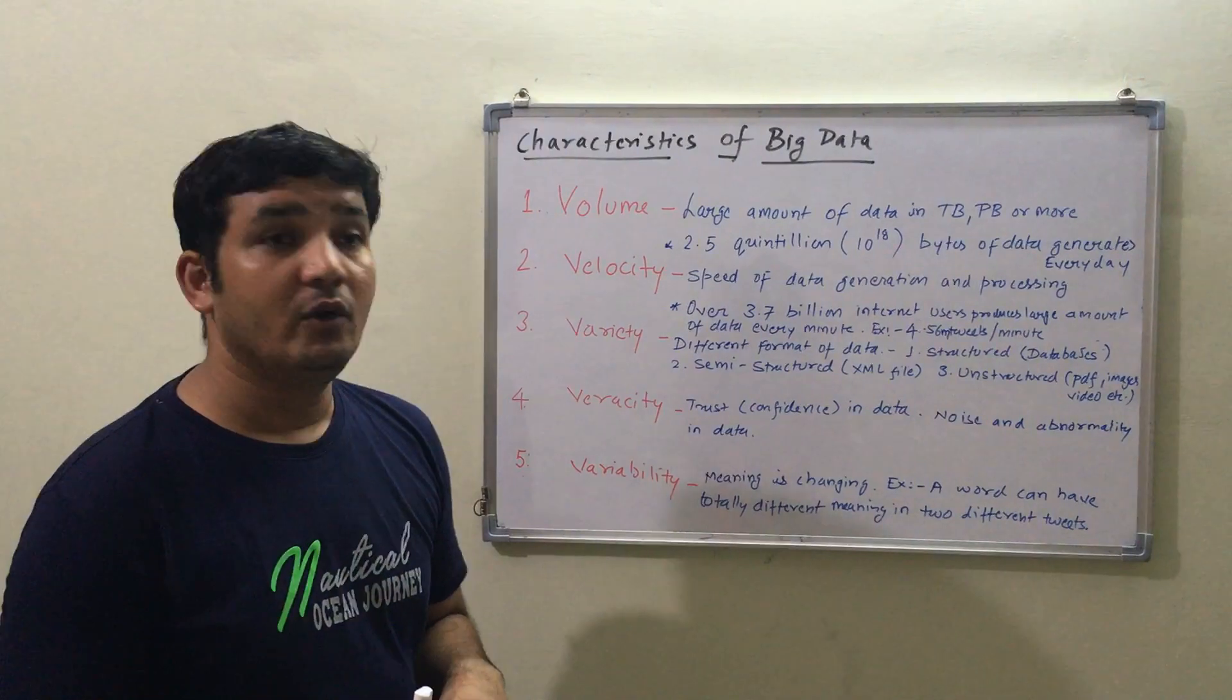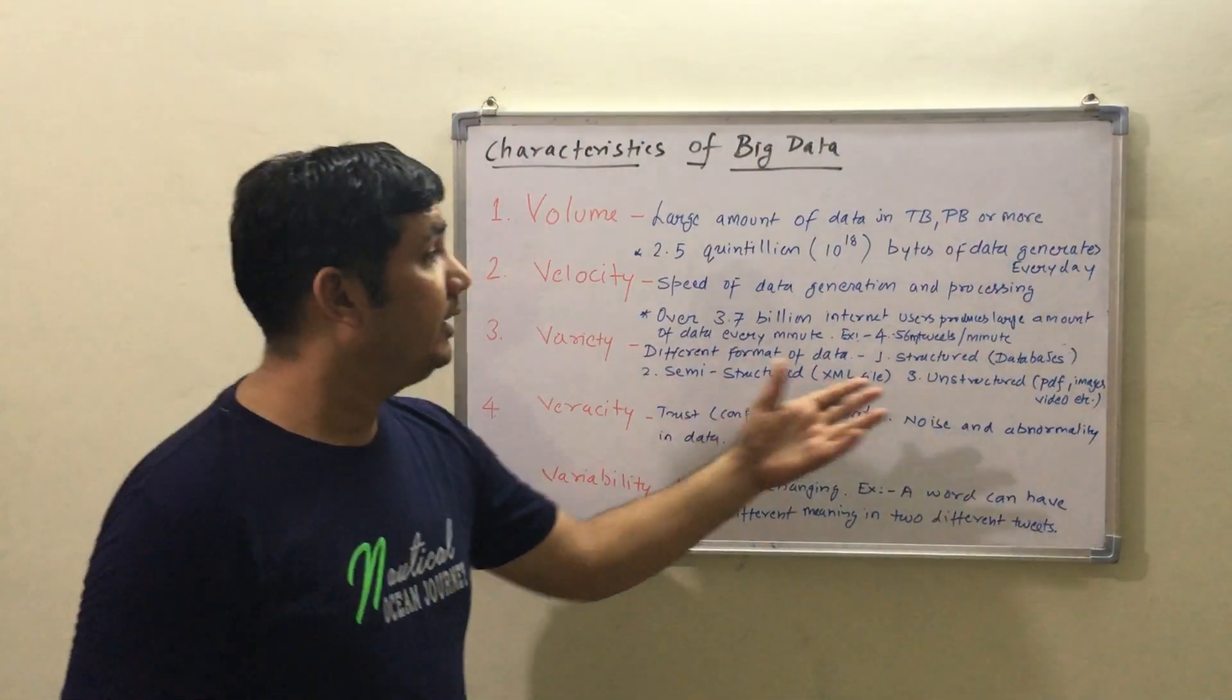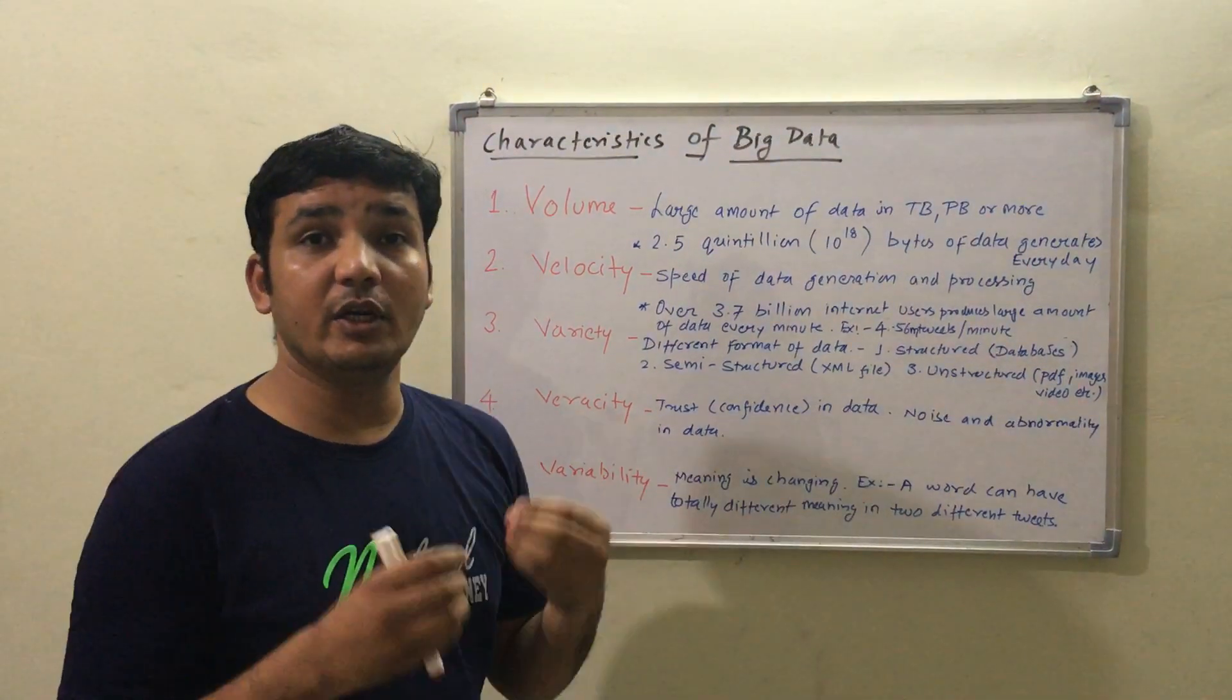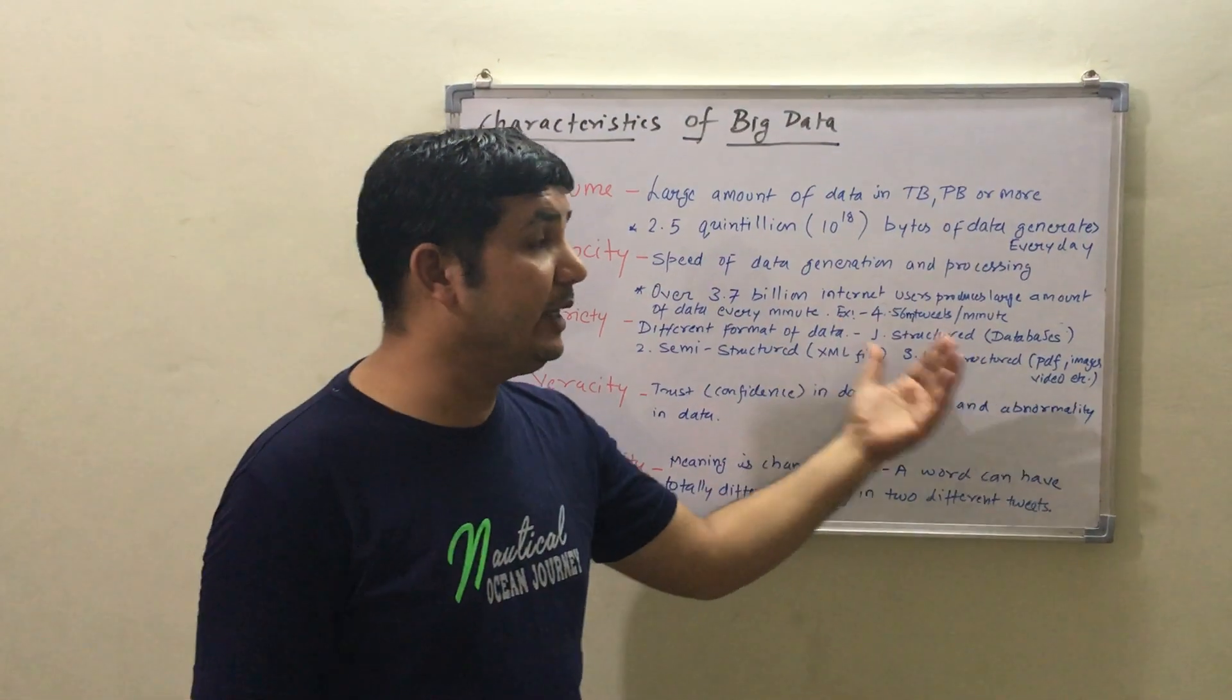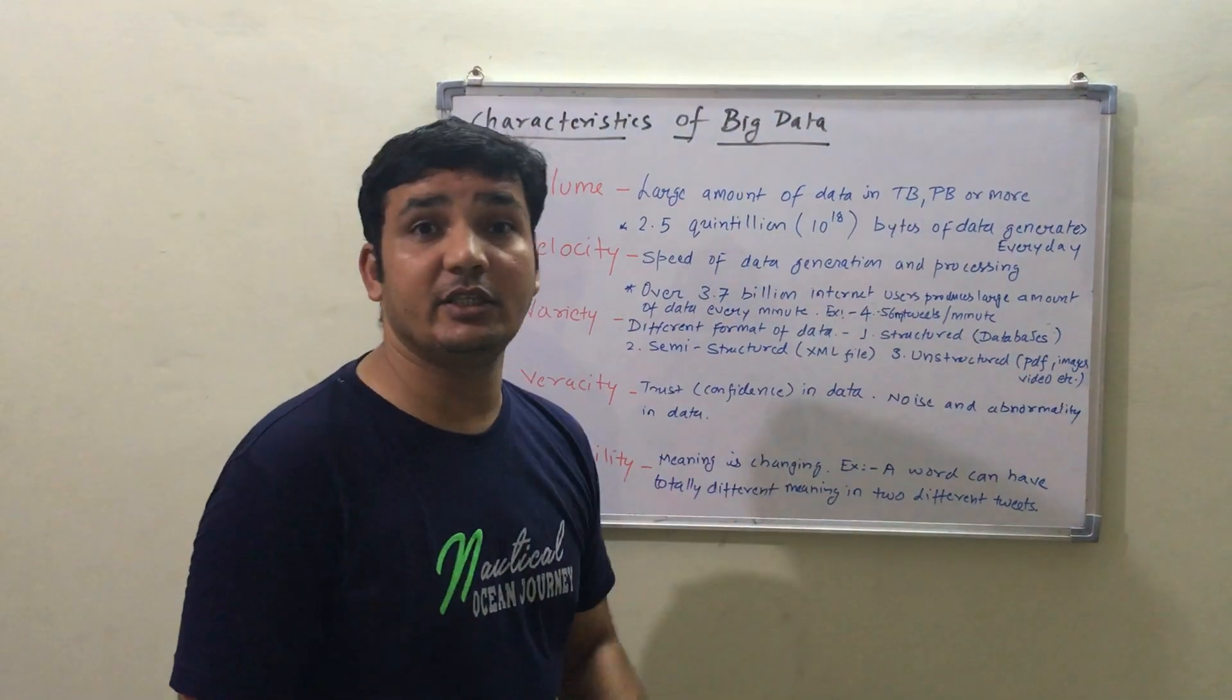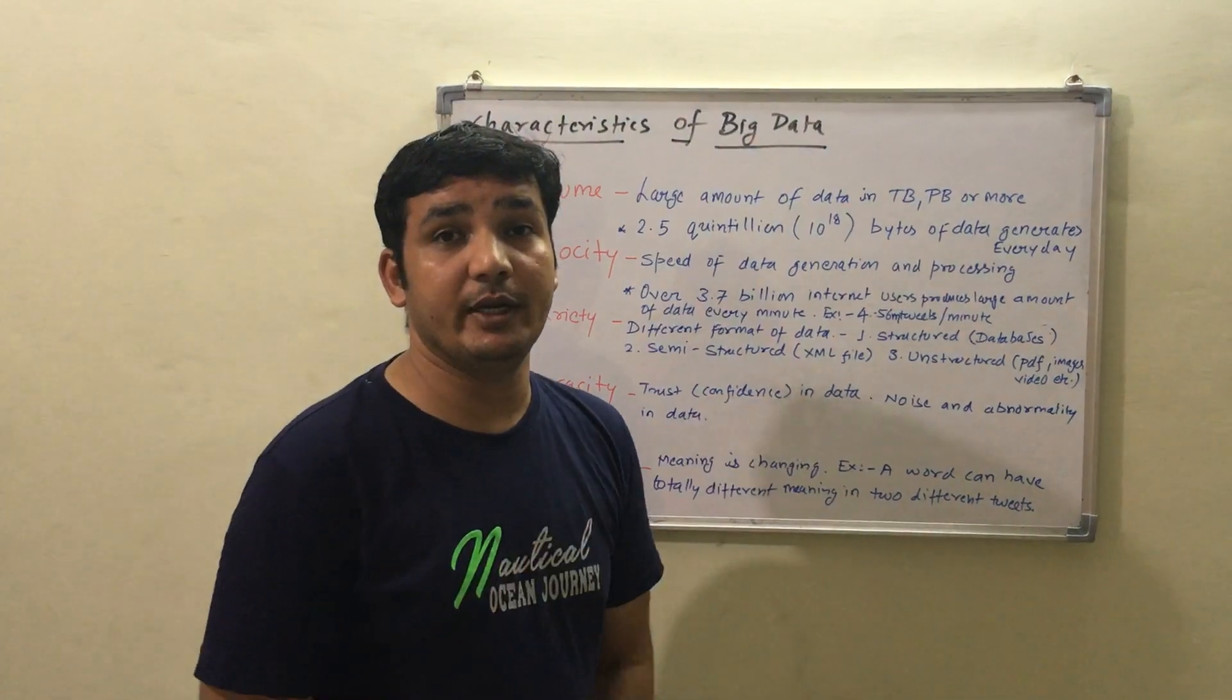Then comes Variety. Variety means different formats or types of data: structured data, semi-structured data, and unstructured data. Structured data means data in rows and columns like databases. Semi-structured data includes XML and HTML. Unstructured data includes PDFs, images, videos, and text files. Most Big Data is unstructured, and we must analyze this unstructured part to extract value.